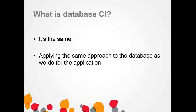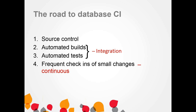In my view, the road to database continuous integration requires four steps. First, we must have our database code in source control. Without that central repository, it's very difficult to do anything with that code. We need it in a central place so everybody has access to it and so we can run automated builds from a known central point of truth. The second part is automated builds, so that every time changes are made to that central code repository, we run through a predefined process that checks whether the latest version of the code can actually be built into a database.